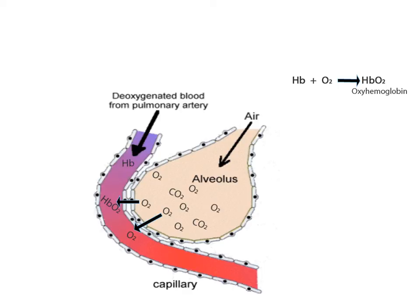Another passenger carried by hemoglobin is carbon dioxide. When hemoglobin binds to carbon dioxide, a compound called carbaminohemoglobin is formed. Carbaminohemoglobin is delivered to the lungs where the carbon dioxide is released from the hemoglobin molecule and diffuses out of the bloodstream into the alveoli so that it can be exhaled.